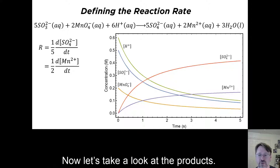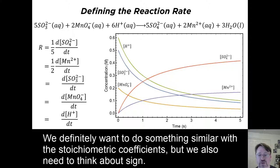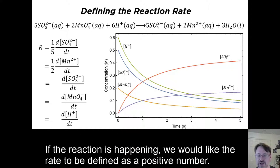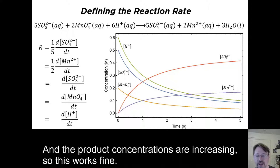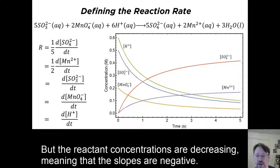Now let's take a look at the products. We definitely want to do something similar with the stoichiometric coefficients, but we also need to think about sign. If the reaction is happening, we would like the rate to be defined as a positive number. And the product concentrations are increasing, so this works fine. But the reactant concentrations are decreasing, meaning that their slopes are negative.